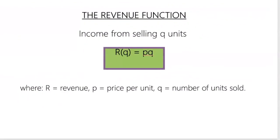The revenue function is income from selling Q units. So revenue is equal to price times quantity, where it's price per unit. That's what Q represents. And Q is the number of units sold.